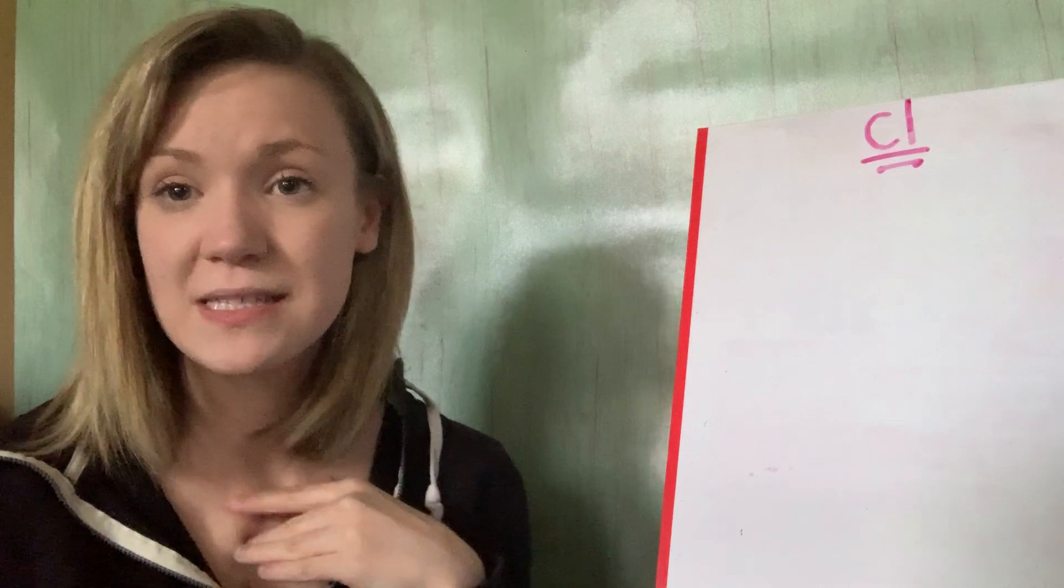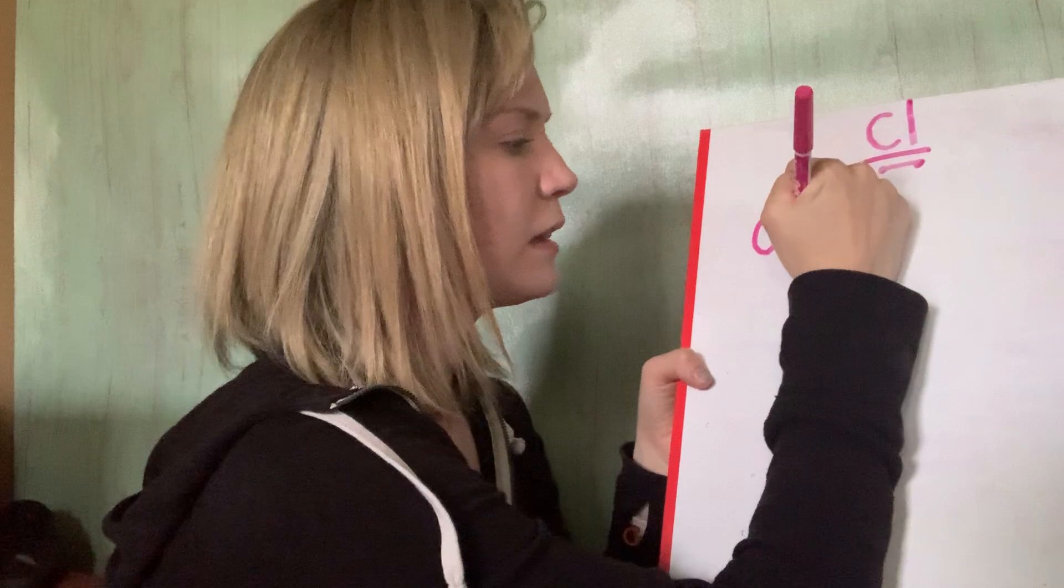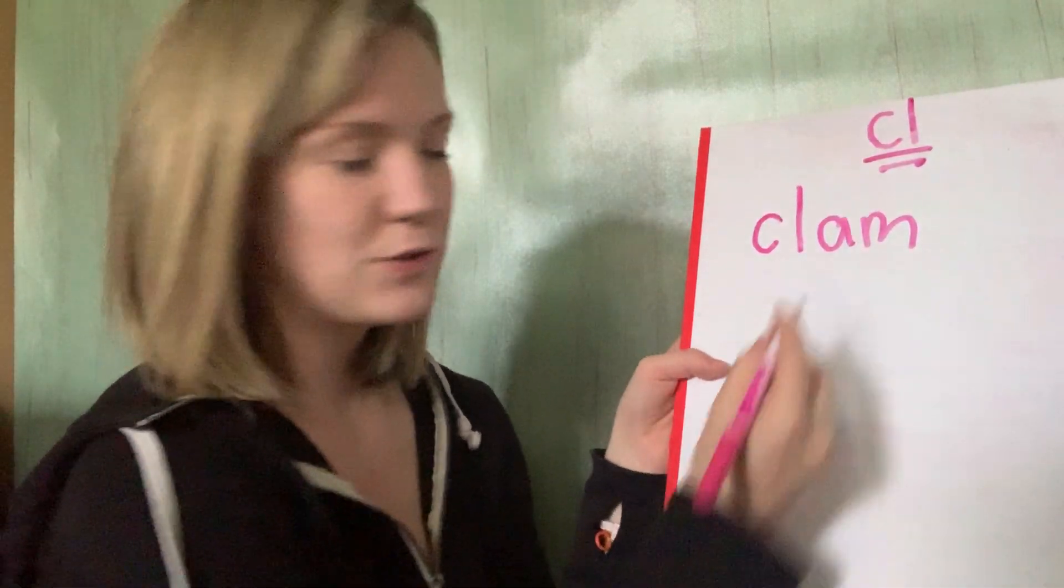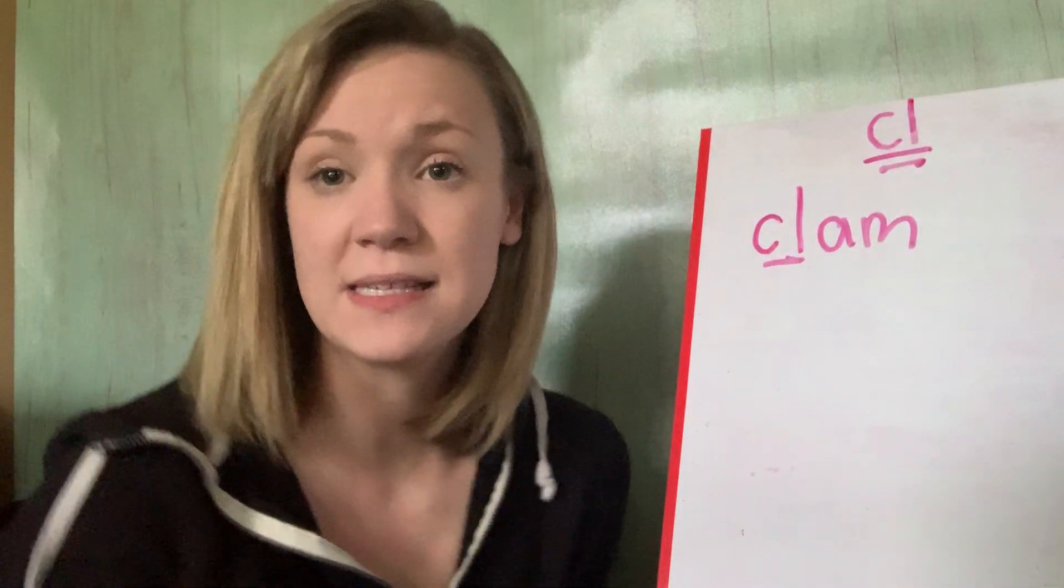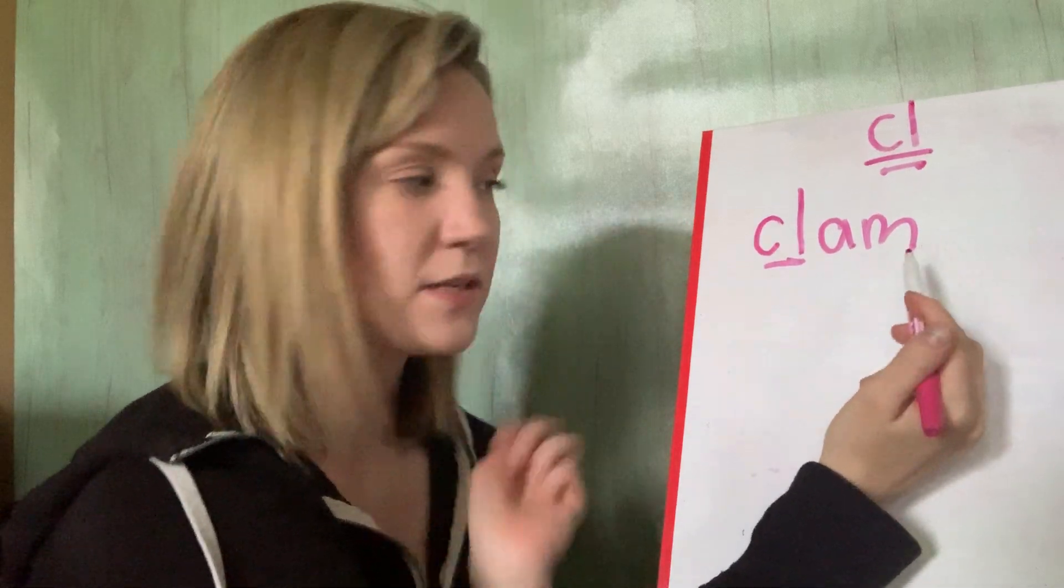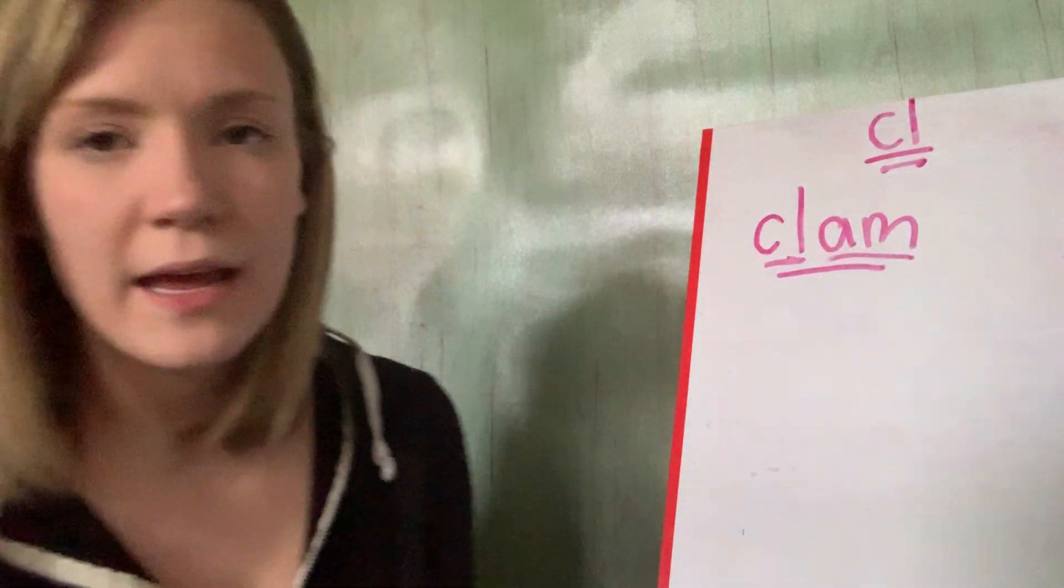Okay. So my first C L word is going to be clam. Am. Okay. So cool is at the beginning and then A and M. A and M is a sight word of ours. And we know that A M says am. So let's put those two sounds together. Cool. Am. Clam. All right. So clam is one of my words.